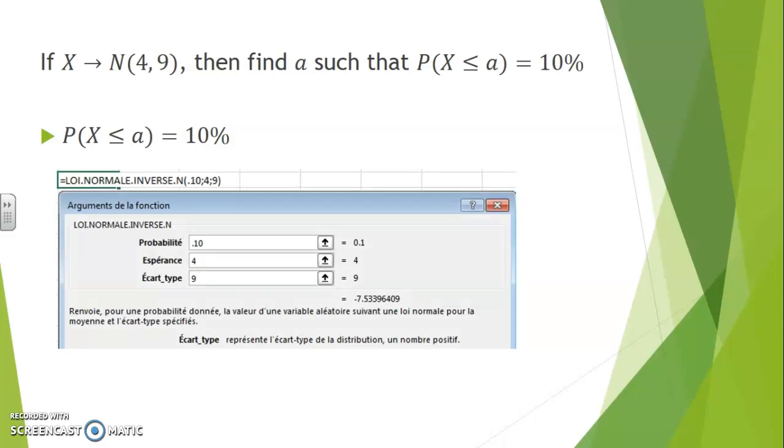Or in French, loi normale inverse. Once again, you will provide the probability corresponding to the right bound cutting off the area, as well as the normal law's expected value and standard deviation.